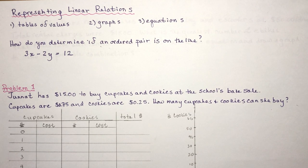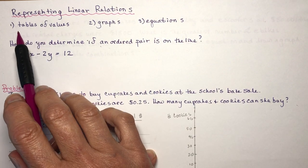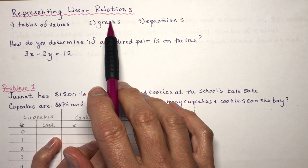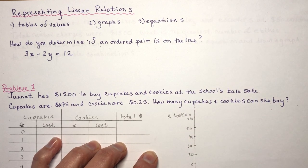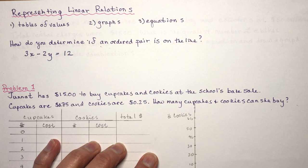Representing linear relations. This is a review from grade 9 to prepare you to solve systems of equations. You can represent linear relations using tables of values, graphs, or equations. We want to see that you can represent it on your own.